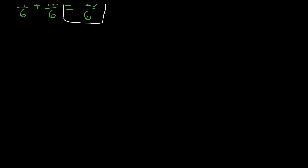This time let's say we have both negative numbers: negative 8 plus negative 3. They're both negative, so they have the same sign. We keep the negative sign and add the numbers. 8 plus 3 is 11, so our final answer is negative 11.